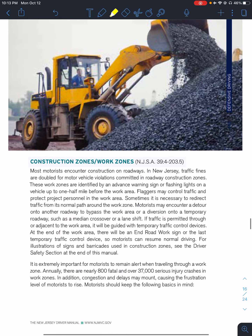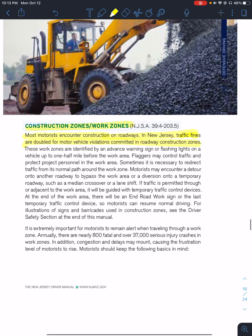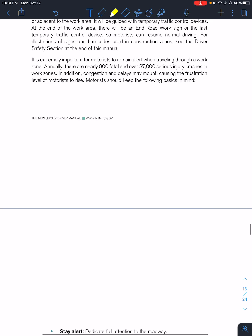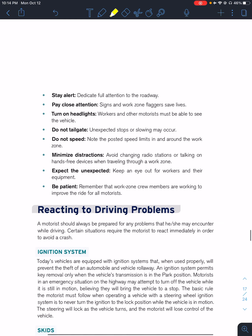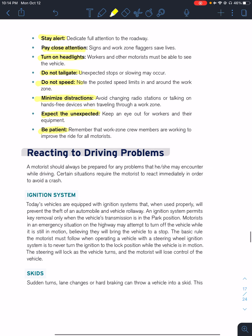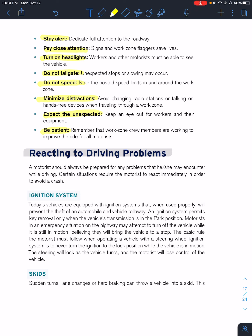Construction zones — your fines are doubled in construction zones. There's going to be signage letting you know you're entering one, and sometimes police will hide in there. Tips for driving through construction zones: stay alert, pay attention, turn on your headlights, do not tailgate, do not speed, avoid any distractions, expect the unexpected, and be patient. There was a campaign that said 'Slow down, my mommy works here' and 'Slow down, my daddy works here' in these construction zones — there are people walking and you're driving by at 60 miles per hour, which is not a good situation for those workers.